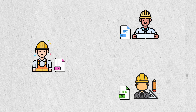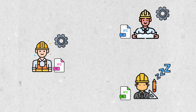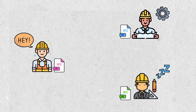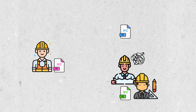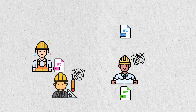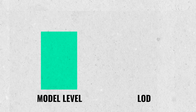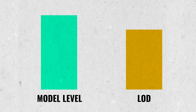Moving into level three, you need to be really careful about making sure everyone is working together and who has control of which parts — you don't want an engineer making bespoke changes to the architecture, and likewise you don't want the architect changing the engineering. LOD is very similar to levels but more refined. You can have a level two model in different levels of LOD, and a level three model in different levels of LOD as well.